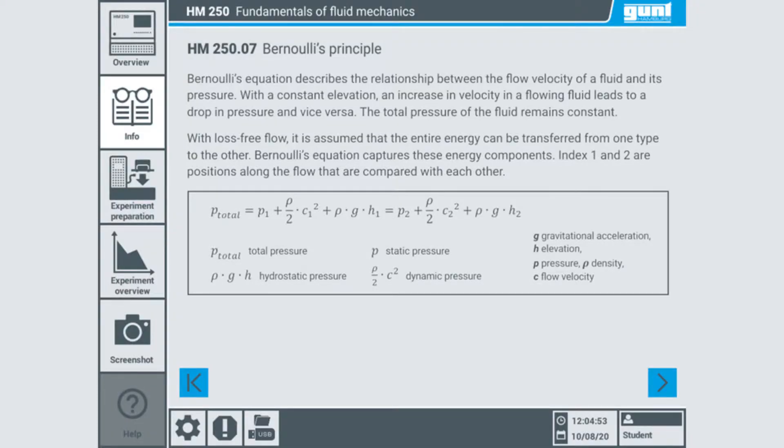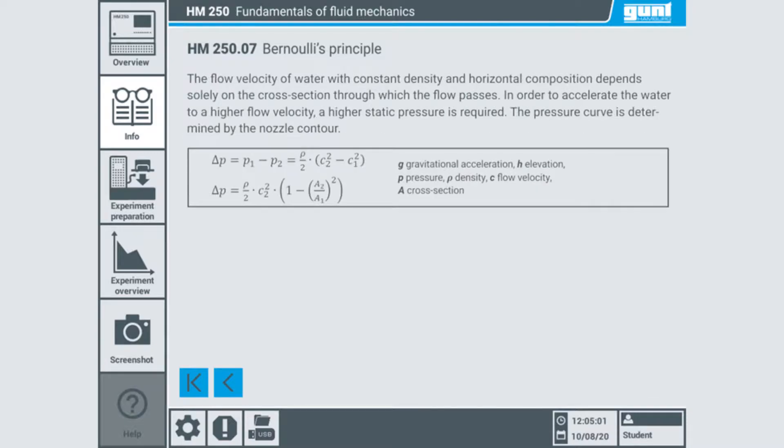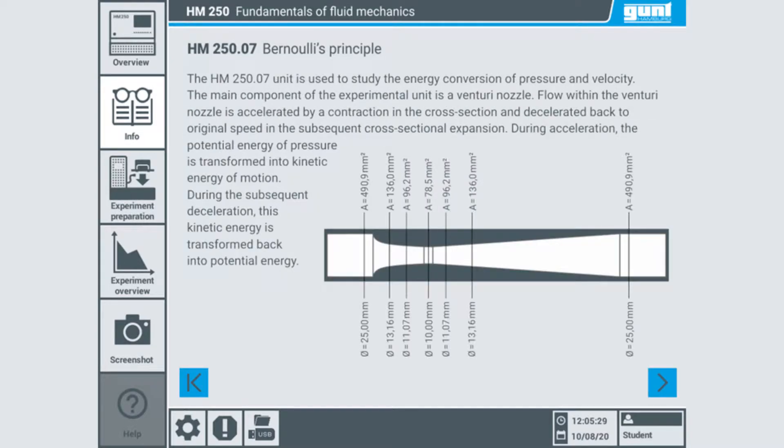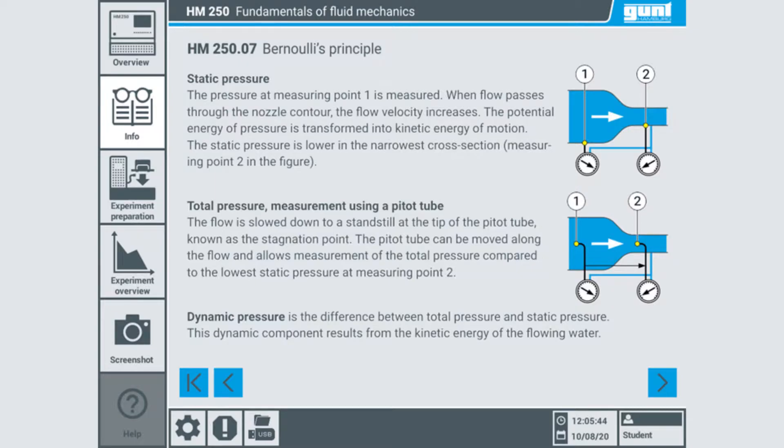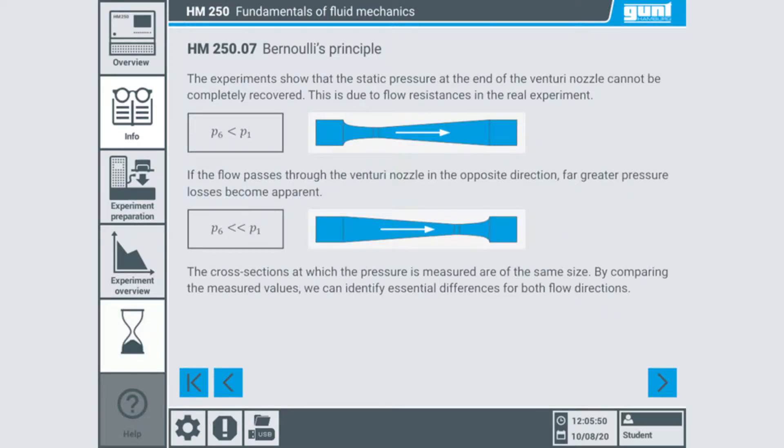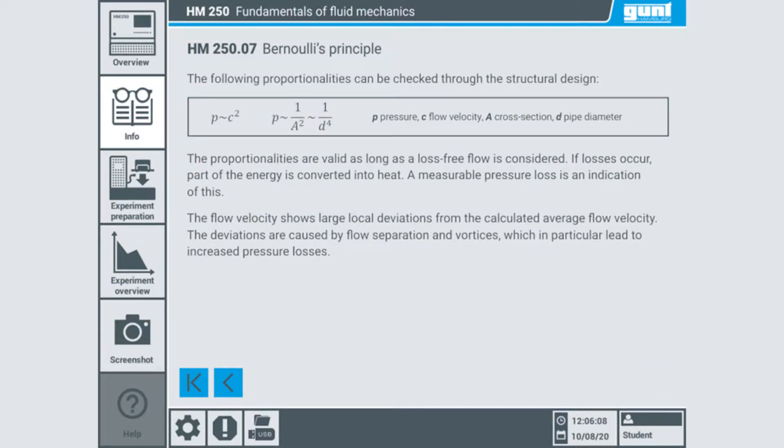On the following pages, the relationship between the flow velocity of a fluid and its pressure is explained. With loss-free flow, energy can be transferred from one form to another. This is expressed in Bernoulli's formula. The flow velocity and its profile are entirely dependent on the cross section through which the flow passes. This is explained in the description of the actual experiment.